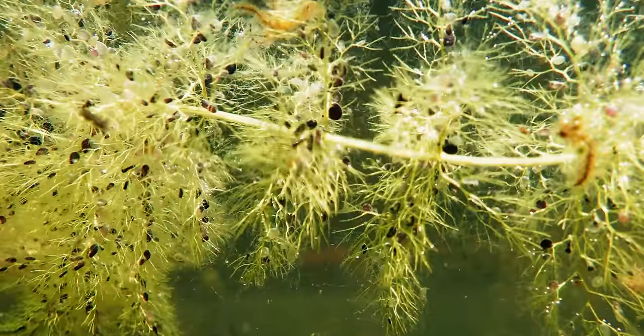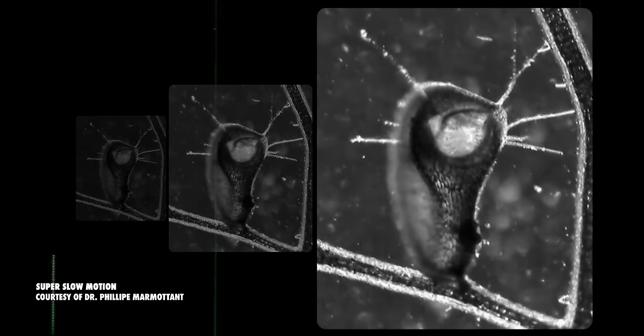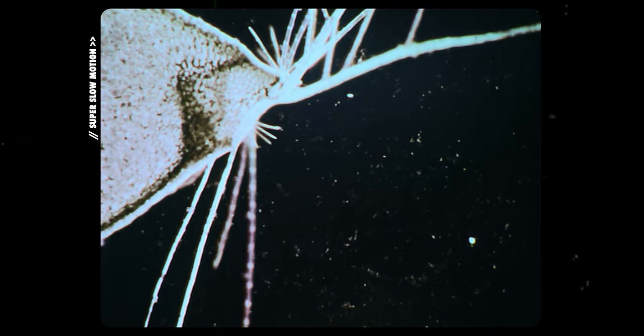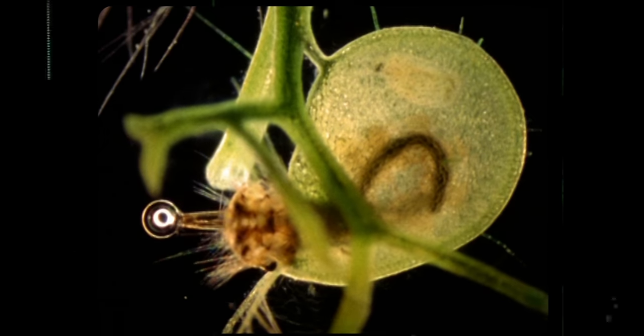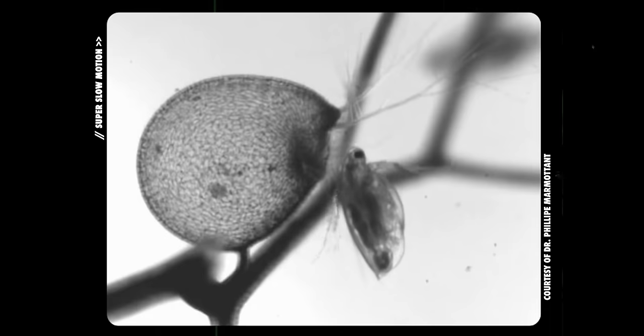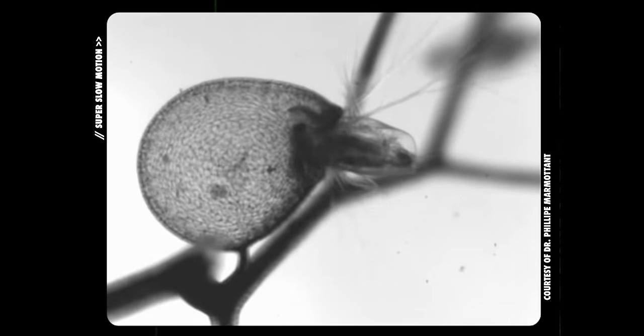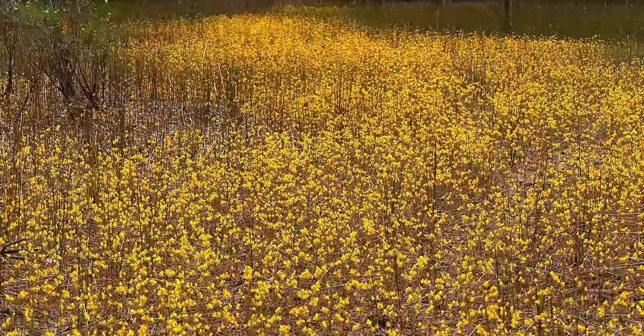Blink and you'll miss this aquatic carnivorous cutie strike. In just a few milliseconds, it sucks in its prey at up to 4 meters per second, trapping its victim in a watery grave to be digested for precious nutrients. These unique and complex suction traps make it the fastest known plant in the world. This is the Bladderwort.